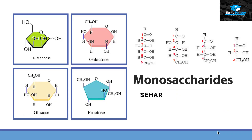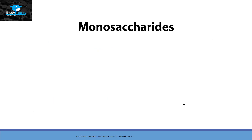Hello friends, this is Seher from Easy Peasy. The topic we are going to discuss today is monosaccharides. Monosaccharides are monomers of polysaccharides, so they are the simplest sugar unit that we know of.